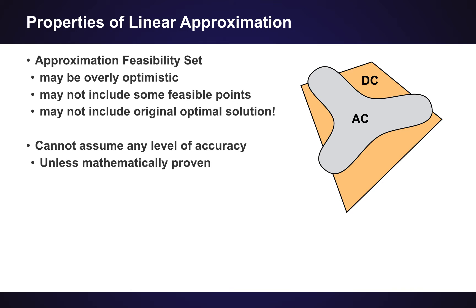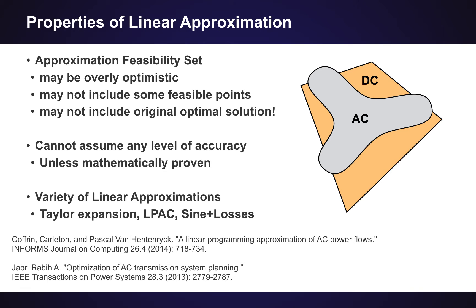So really what is important here is that we cannot assume any level of accuracy unless we are able to prove it mathematically, which is possible maybe for some very specific linearizations. However, there's a large variety of linear approximations out there, which is linked to the fact that linear optimization problems are very easy to solve. And some other popular linear approximations beyond the DC approximations are such as the Taylor expansion, the LP approximation of the AC power flow problem, or approximating the sine but including the losses. So these are some varieties.